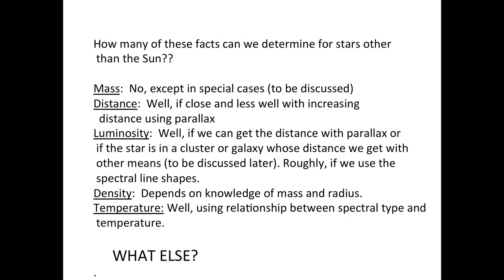So, these are facts we've determined for the sun. How many of these can we determine for stars other than the sun? Well, mass is out, except in certain special cases, in particular for binary stars, because we don't have something orbiting the star that we can use as a mass probe. Distance, well, we can do this if it's close enough and less well if it's more distant using parallax. So, for many stars, we can get a pretty good estimate of the distance.